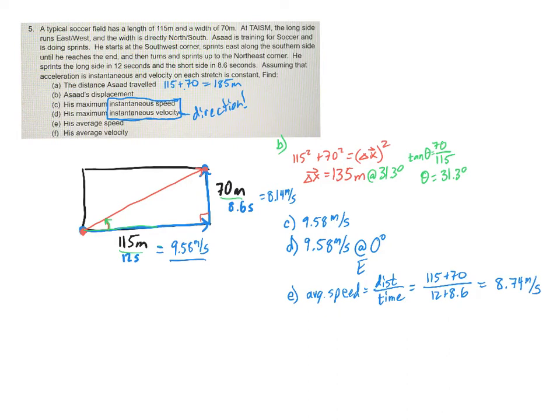Now, this number makes sense. We like to look at our numbers, make sure they make sense. Remember, our fastest speed was 9.58. The slowest was 8.14. So the average should be somewhere in between those two. There's no resting here. There's no zero. So it should be somewhere in between those two. And that's what I got right there is the 8.74.